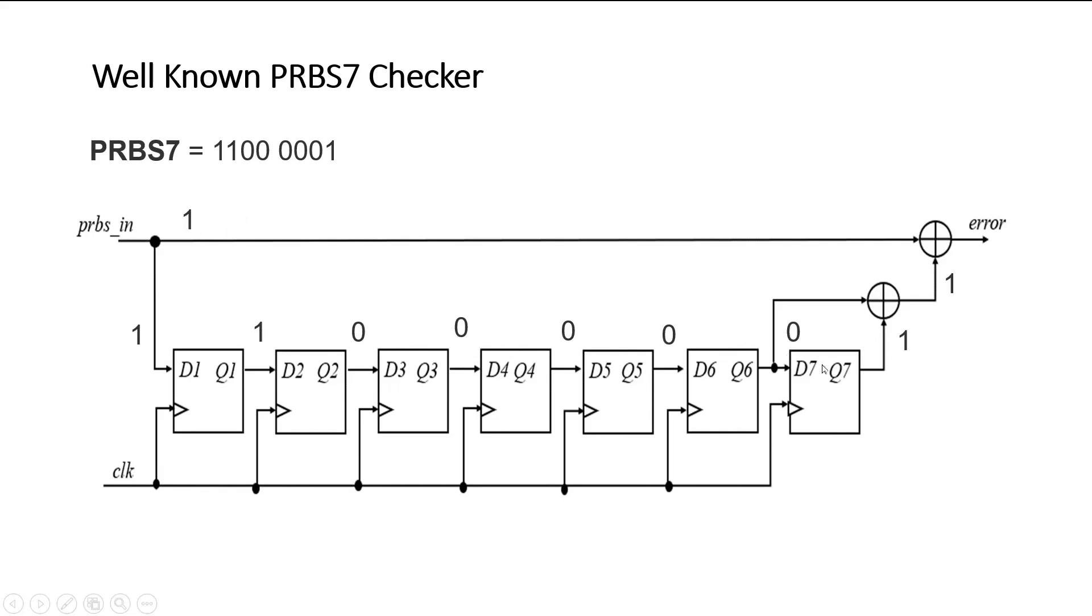So the first and second bits appear here and XORing operation is done which forms the eighth bit, which is one. And eighth bit is coming from outside also, which is again one. So error flag will go zero here because inputs to the XOR gate are same, so output will be zero.